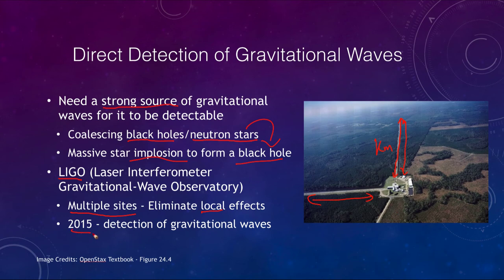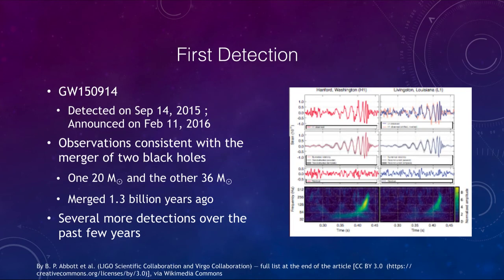In 2015, they were able to make the first detection of these gravitational waves. The first detection, GW150914, was actually made on September 14th, 2015, and was not announced until it had been confirmed and verified a few months later, in February of 2016.